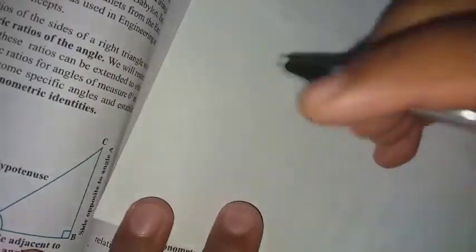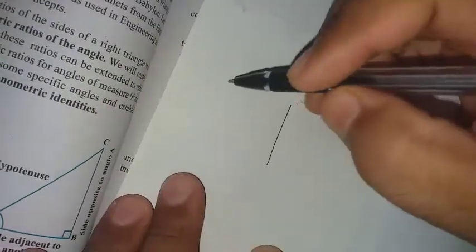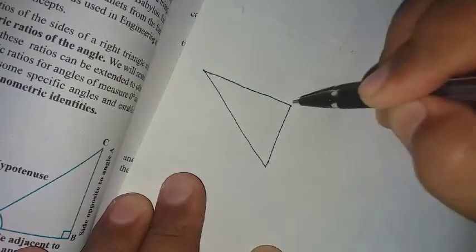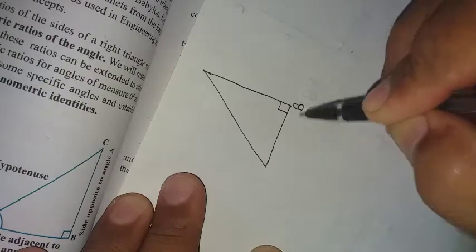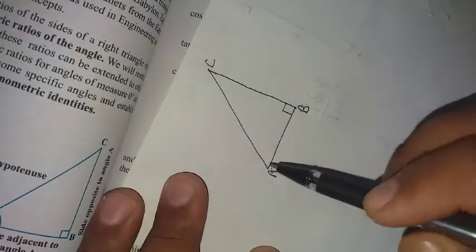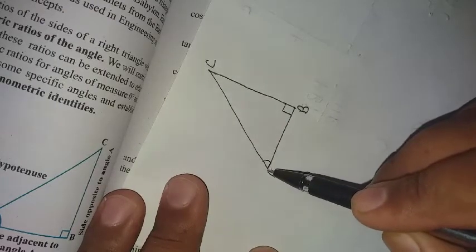Let me tell you first, suppose we have this right angle triangle. This one is a right angle triangle and it is right angled at B. Here it is A and it is C.